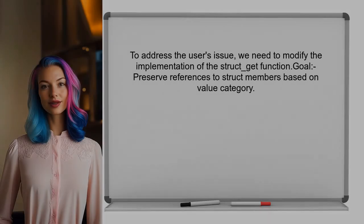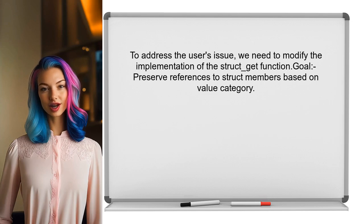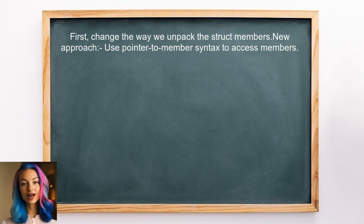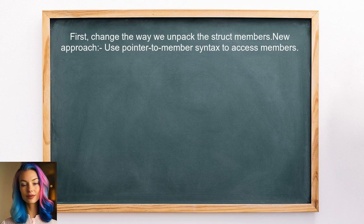To address the user's issue, we need to modify the implementation of the struct_get function. The goal is to ensure that the references to the struct members are preserved based on the value category of the input. First, we will change the way we unpack the struct members. Instead of using structured binding, we can directly access the members using the pointer to member syntax.